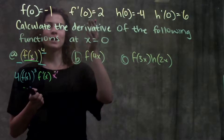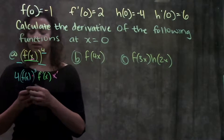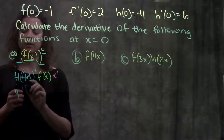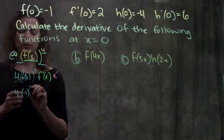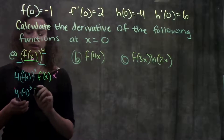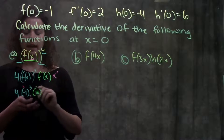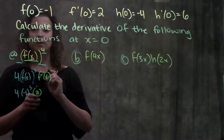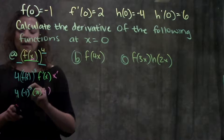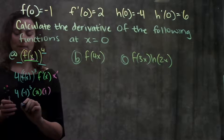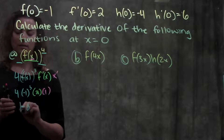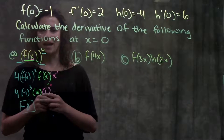From here, I can just plug in all the values they gave me. I have 4 times f of x — they told me f of 0 is minus 1 — cubed, times f prime of x — they told me f prime of 0 is 2 — times x prime. Remember, the derivative of x is just 1. Simplifying: 4 times minus 1 cubed gives me minus 4 times 2, which becomes minus 8. And that's the answer for part A.